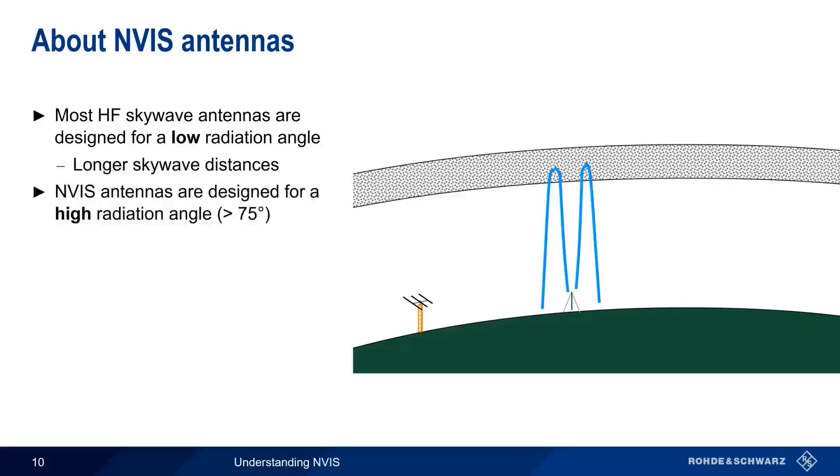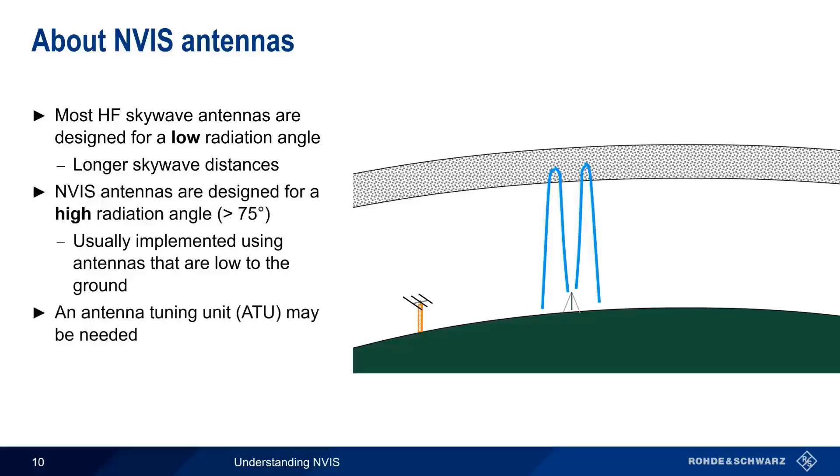As we'll see, there are a number of ways to do this, but the most common method is using an antenna that's located close to the ground. And just as with traditional SkyWave antennas, an antenna tuning unit may be needed when using a NVIS antenna, especially if the antenna is being used over a wide frequency range and or as a field expedient antenna.